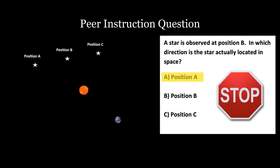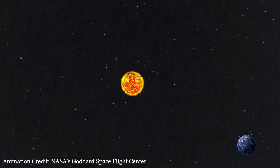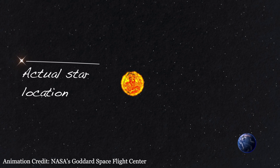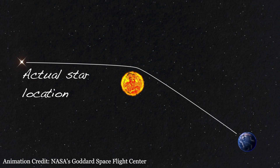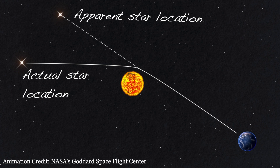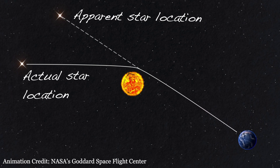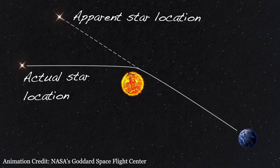The answer is position A. In this animation, you can see light from a star at position A bending when it passes close to the Sun. Note that the position of the star relative to other stars in the area can be precisely determined at a time when the Sun is nowhere around.